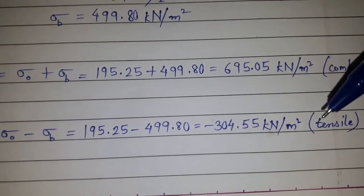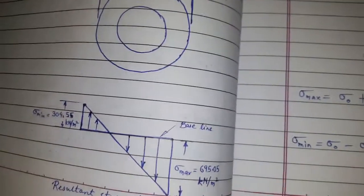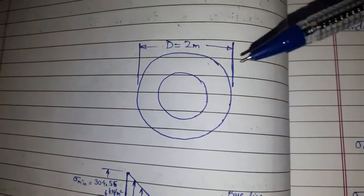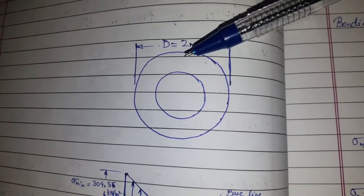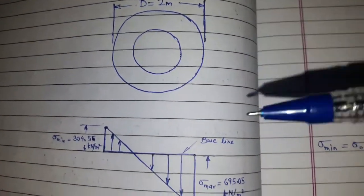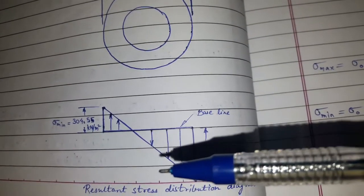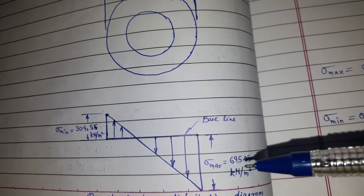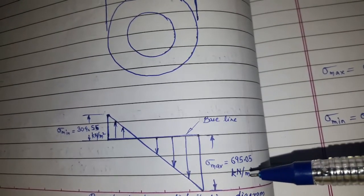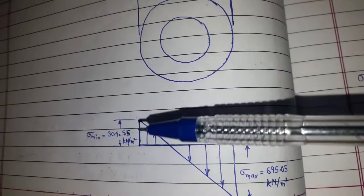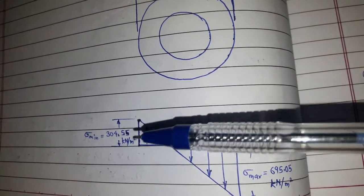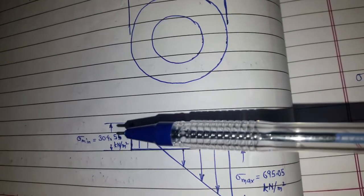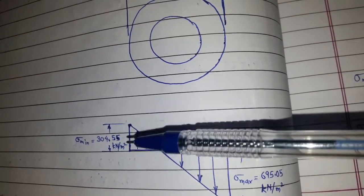And now the resultant stress diagram. This is the figure of the section which will look like the outer diameter which is 2 meter. So we will draw the resultant stress distribution. The sigma max is 695.05 kN per m² and the minimum stress is 304.55 kN per m², which is negative, that is tensile, that's why we have drawn here.